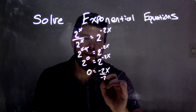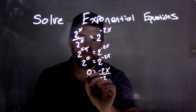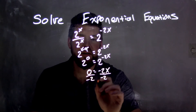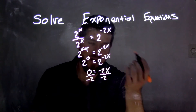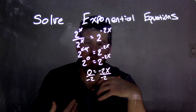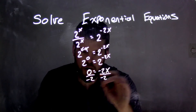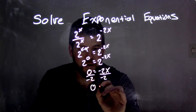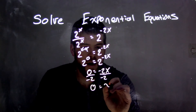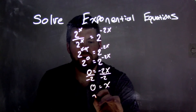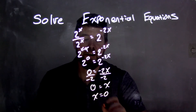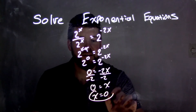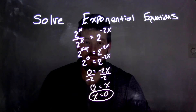We can divide by negative 2 on both sides. We're left with 0 divided by negative 2, which gives us 0 equals x, and I can rewrite it with x out first, so x equals 0.